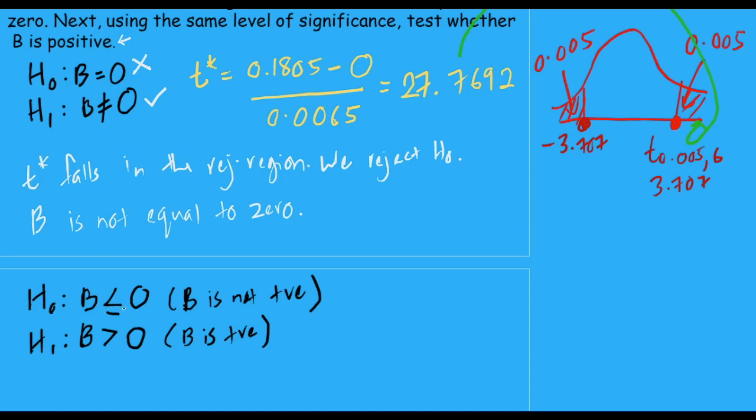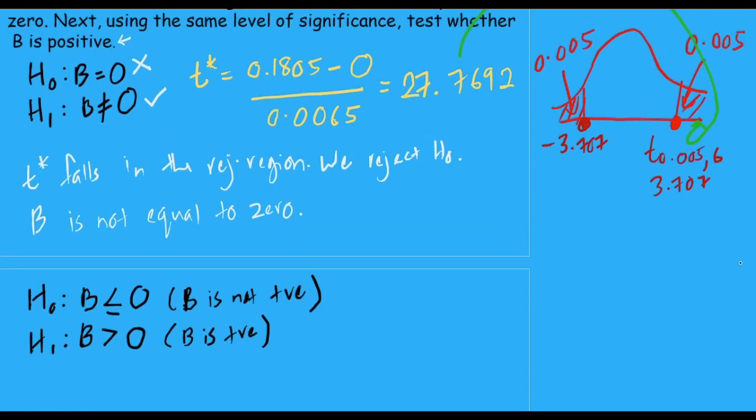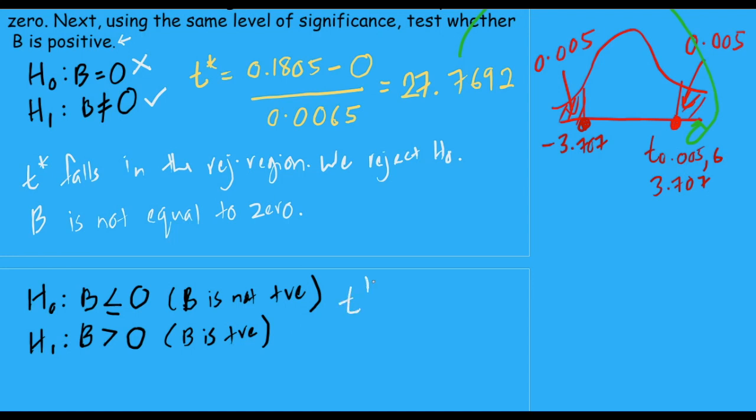So if you are supposed to test whether B is negative, you would change this to B less than 0. Okay. So we have the same test statistic there. Okay. T star would be 27.7692. And what happens to the rejection region? Now the rejection region is only one tail and it is on your right hand side. Alpha would be 0.01. So you could check the T distribution, but we already have this value from our confidence interval just now. So this one is T 0.01 comma 6. So the value is 3.143. Okay. Now we are going to check whether this falls in the rejection region and definitely, definitely falls in the rejection region.